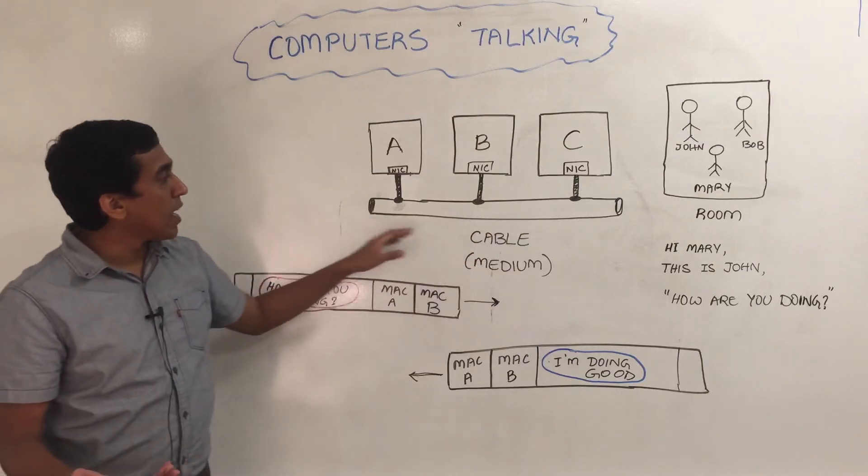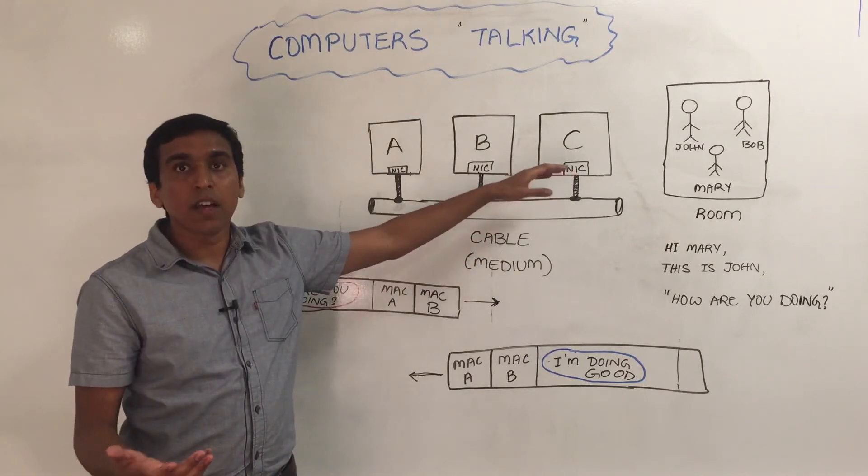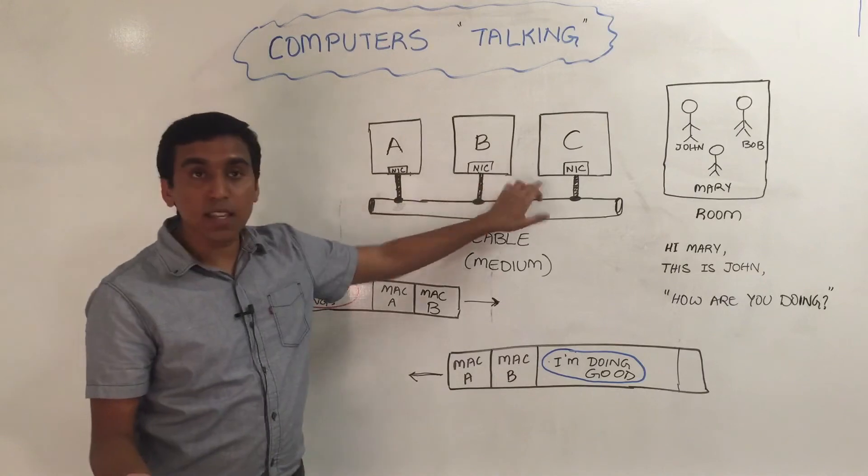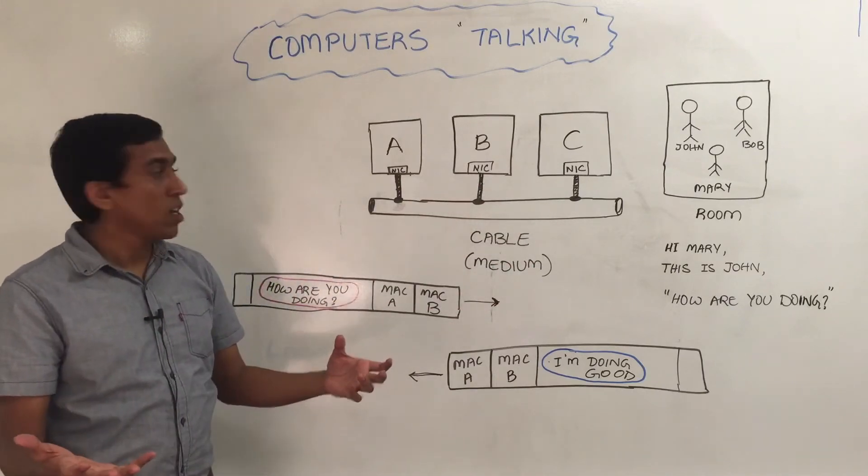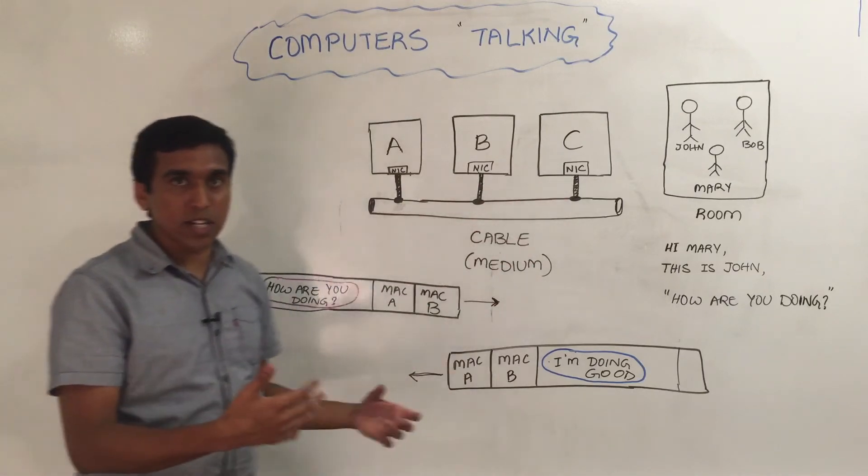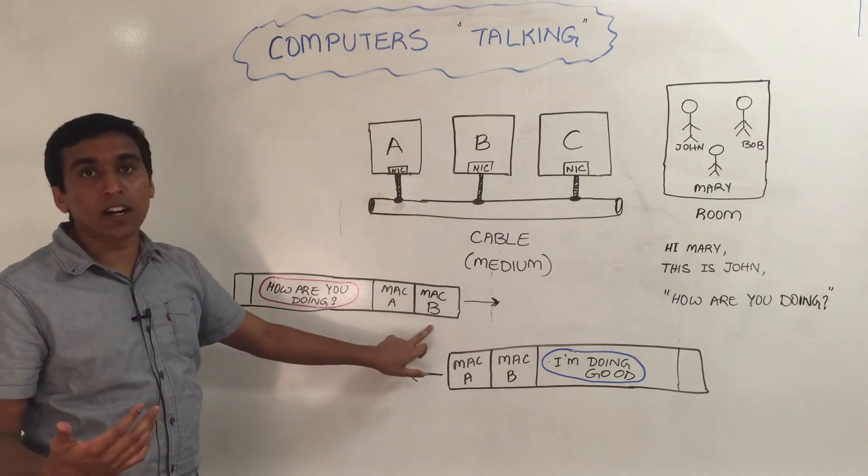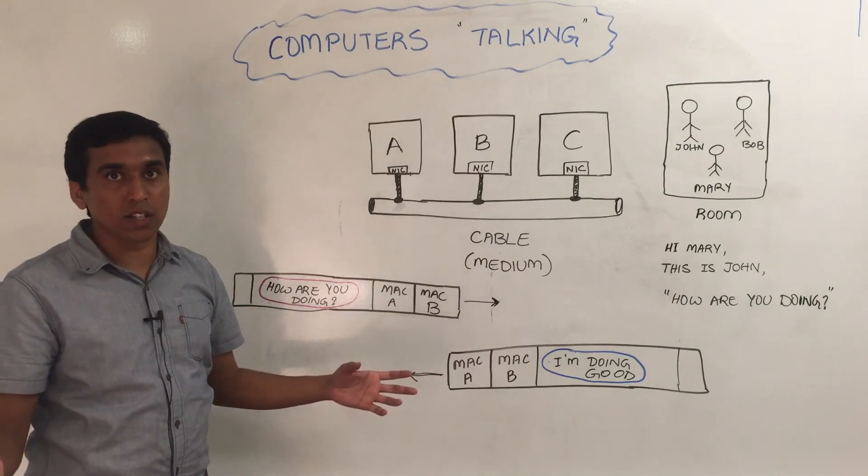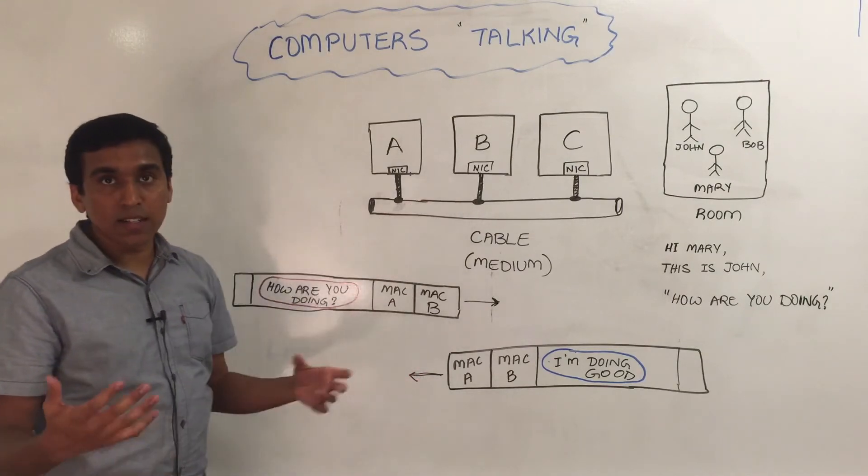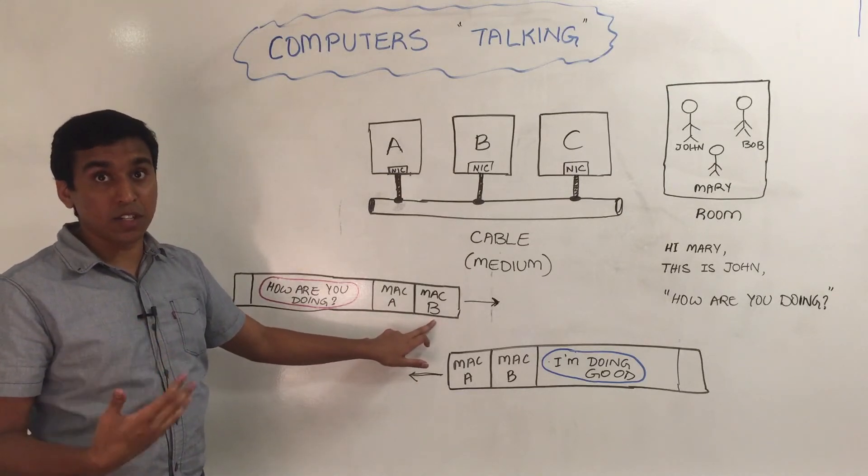So in this case, B and C can listen to this message. Now what happens is when C looks at this message, it sees that it's addressed to B, so it just silently ignores it. And B, when it gets this message, it sees that this message is addressed to me.